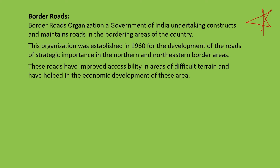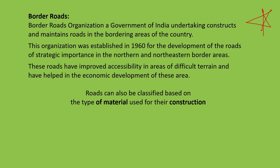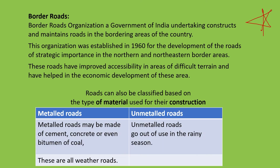Roads can also be classified on the basis of the type of material used for construction. There are two types: metalled roads and unmetalled roads. This is very important from an exam point of view. Metalled roads can be made of cement, concrete, or even bitumen of coal — these are all-weather roads. Unmetalled roads go out of use in the rainy season as water clogging takes place.